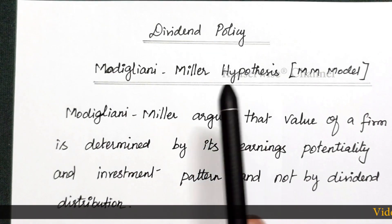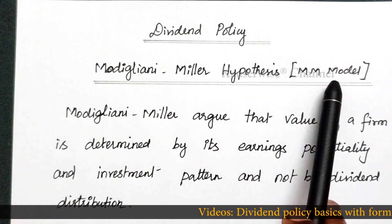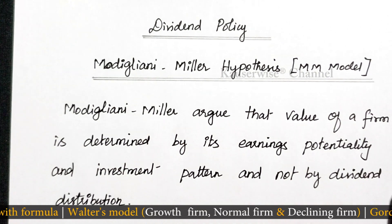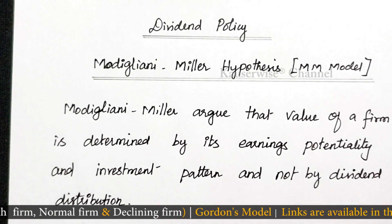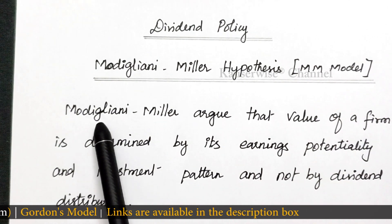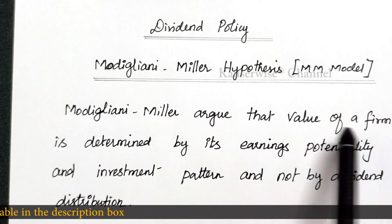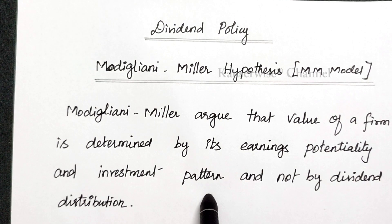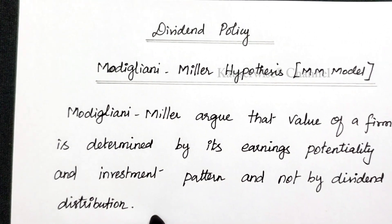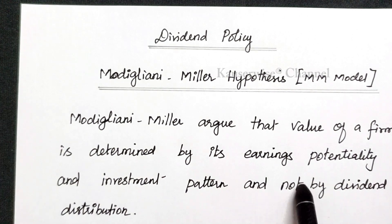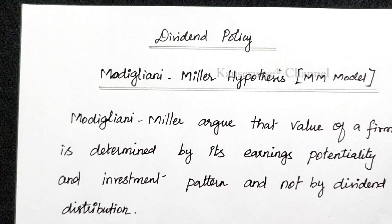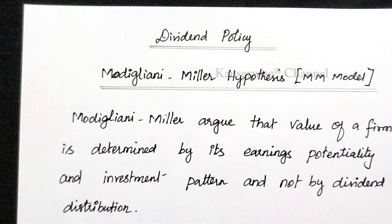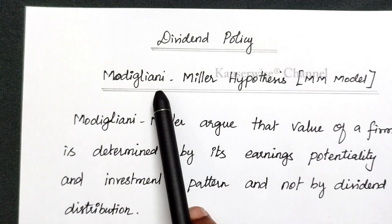Here we are going to see the Modigliani-Miller hypothesis, that is the MM model, which comes under dividend policy. Modigliani-Miller argue that the value of a firm is determined by its earnings potentiality and investment pattern, and not by dividend distribution. So according to them, the dividend decision is irrelevant and it does not affect the market value of equity shares. That is the basic concept of the MM model.